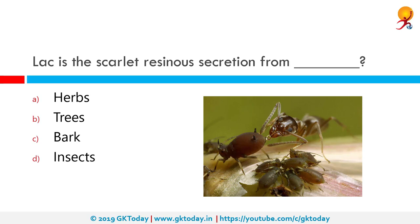Lac is the scarlet resinous secretion of a number of species of lac insects, of which the most common is Kerria lacca. Lac cultivation begins when a farmer gets a stick that contains eggs ready to hatch and ties it to the tree to be infested.